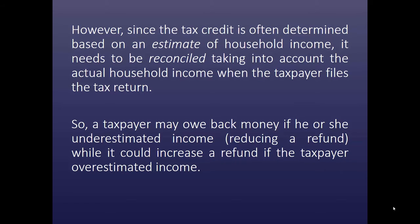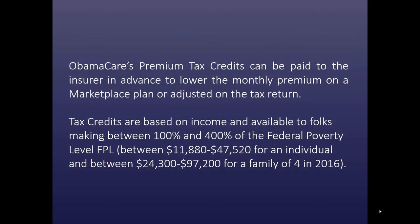A taxpayer may owe back money if he or she underestimated their income, which would reduce a refund, while it could increase a refund if the taxpayer overestimated their income. Obamacare's premium tax credits can be paid to the insurer in advance to lower the monthly premium on a marketplace plan, or they can be adjusted on the tax return. Tax credits are based on income and are available to folks making between 100% and 400% of the federal poverty level — between $11,880 and $47,520 for an individual, and between $24,300 and $97,200 for a family of four in 2016.